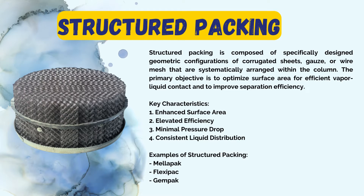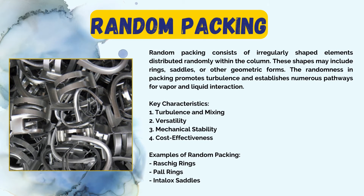Random packing consists of irregularly shaped objects randomly placed within the column. The shapes can include rings, saddles, or other geometrical forms. The randomness of the packing promotes turbulence and creates multiple pathways for vapor and liquid to interact. Unlike structured packing, random objects such as rings and saddles are placed into the column to induce turbulence and vapor-liquid interaction.